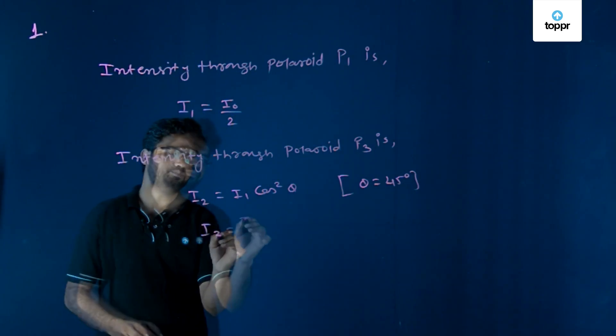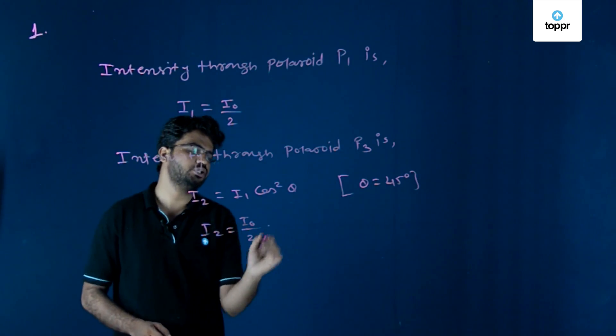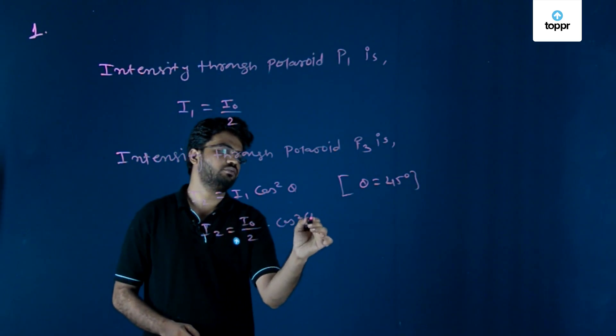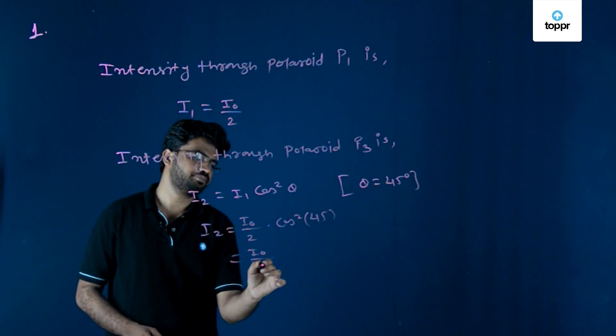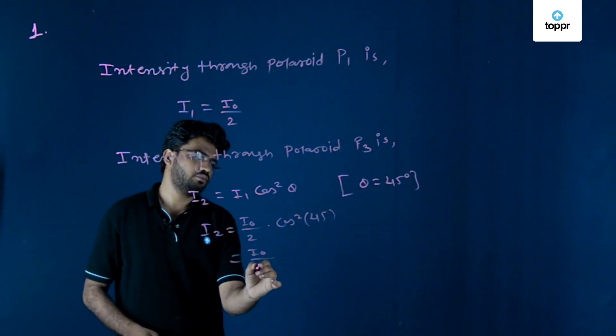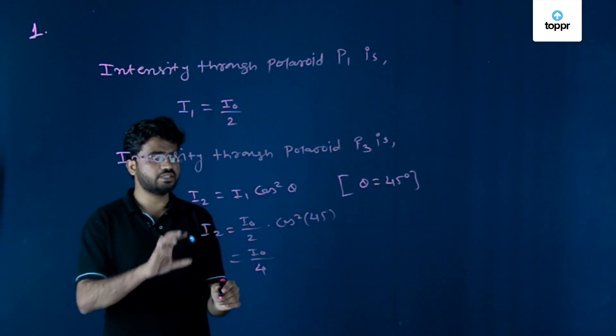So I₂ equals I₀ by 2 times cos²45, and you will get I₀ by 4. This is I₂.